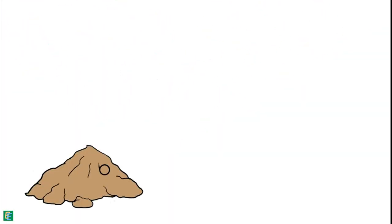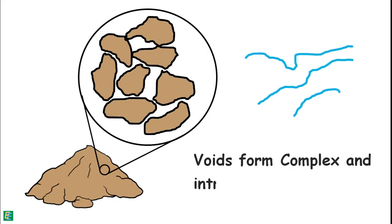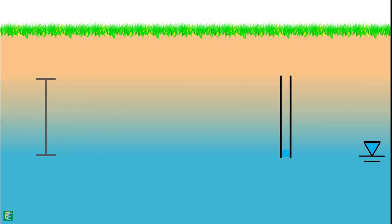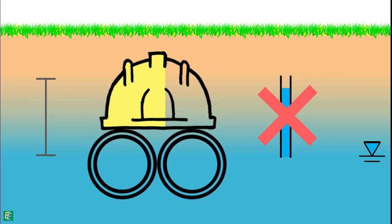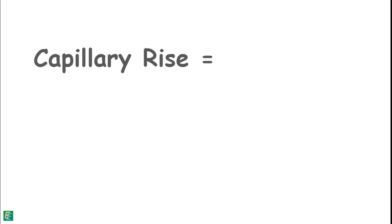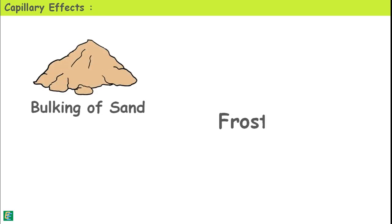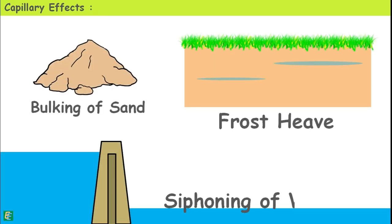Soil voids form a very complex and intricate network. Prediction of capillary rise in such a complex network by comparing it with a capillary tube may be faulty and may not be accurate. So, if possible, we should rely on direct observation of the ground for the capillary rise. Still, a formula has been suggested for approximating the capillary rise. Capillarity also has many other effects like bulking of sand, frost heave, or siphoning of water.